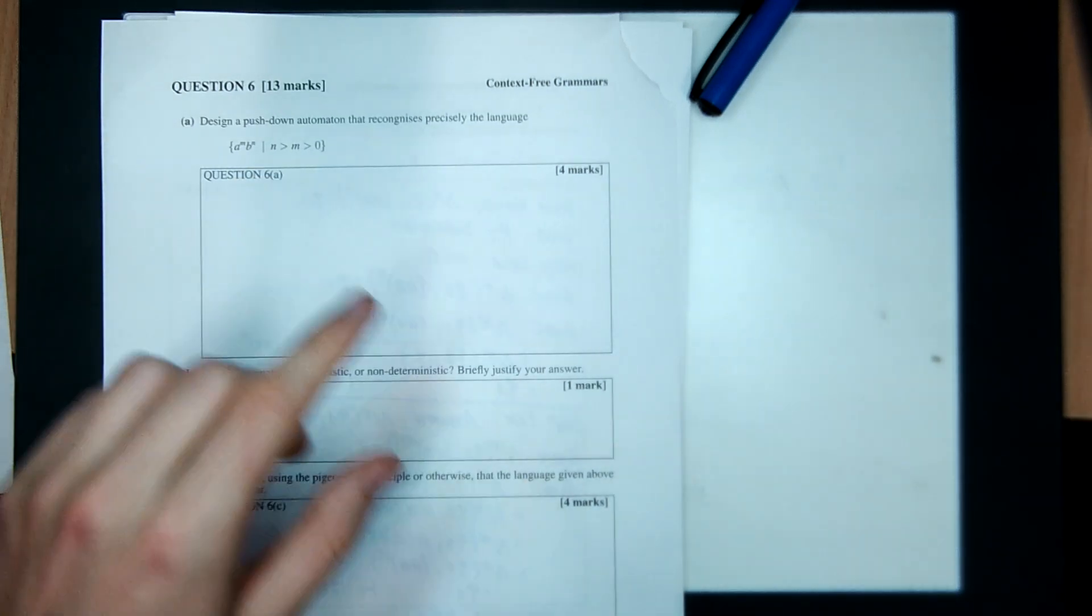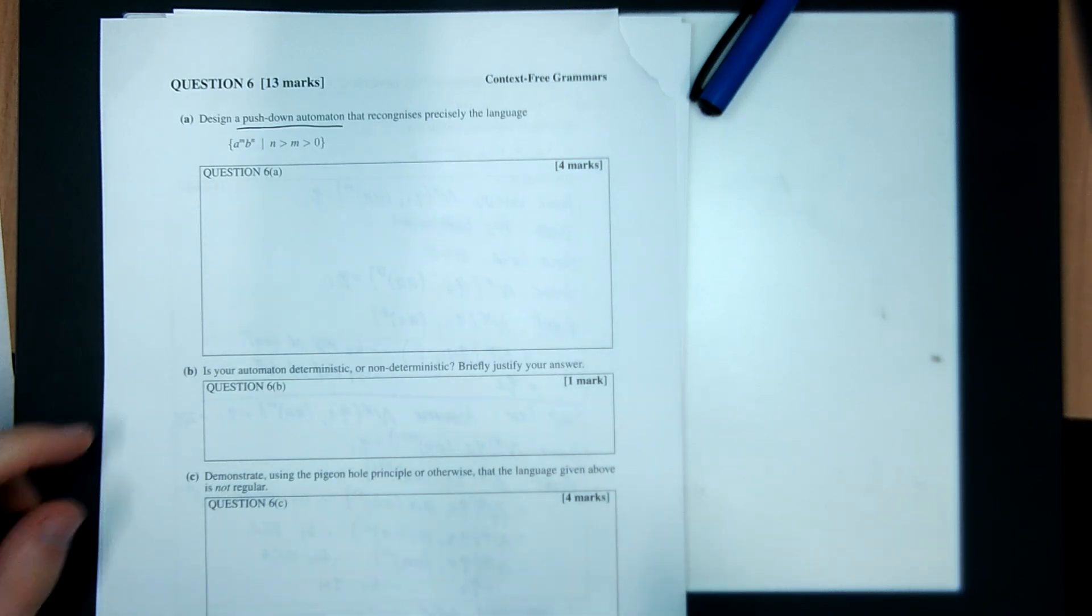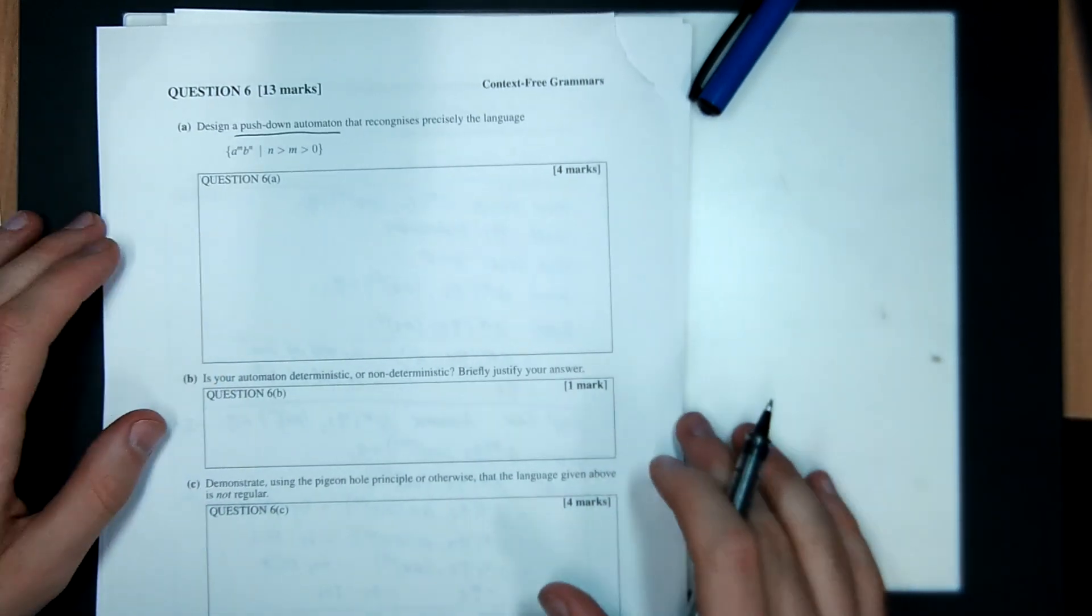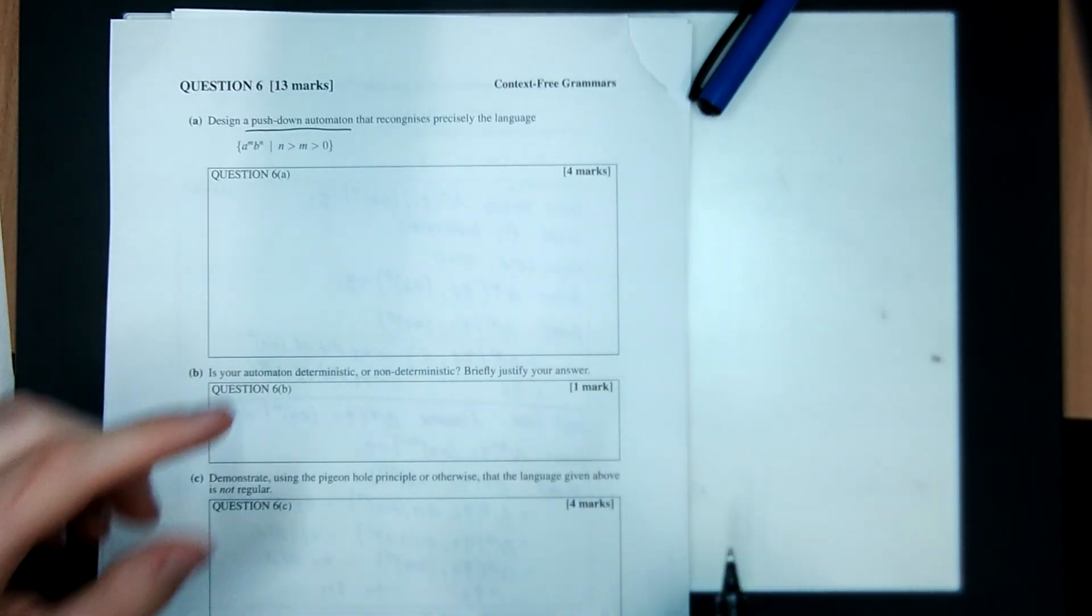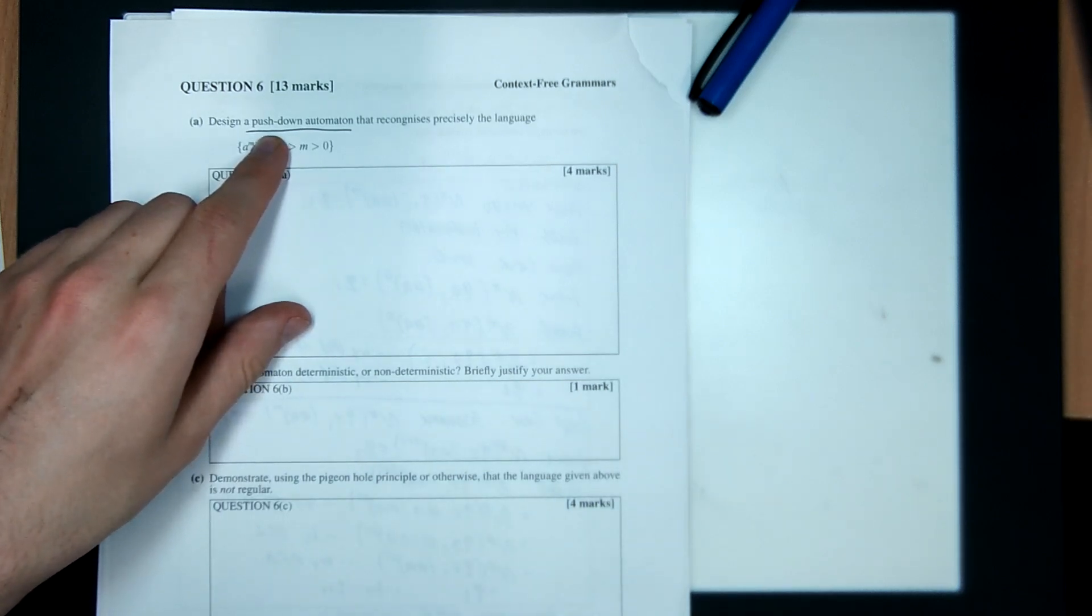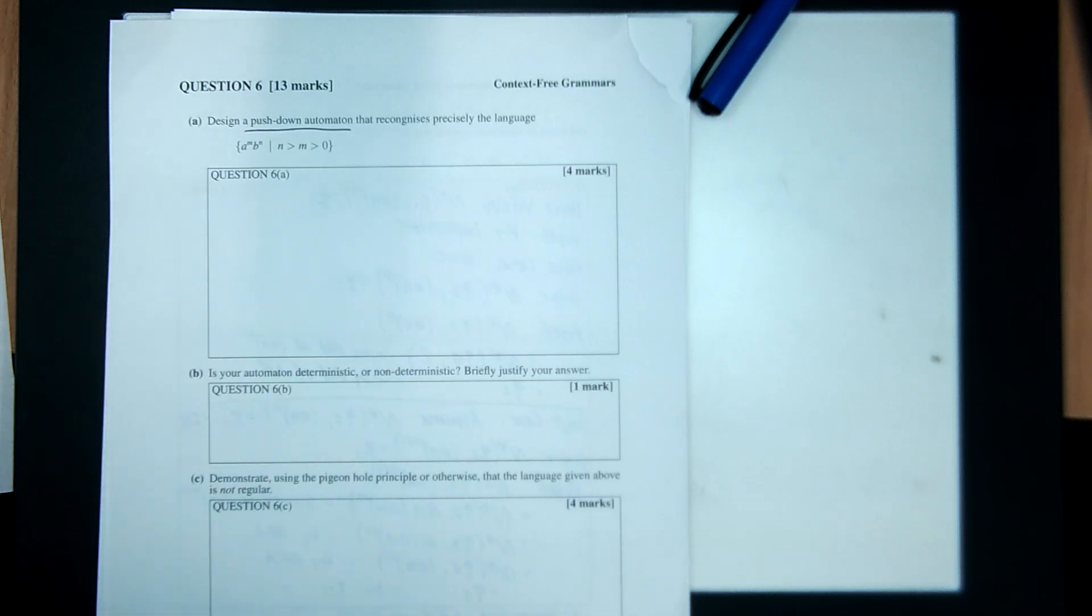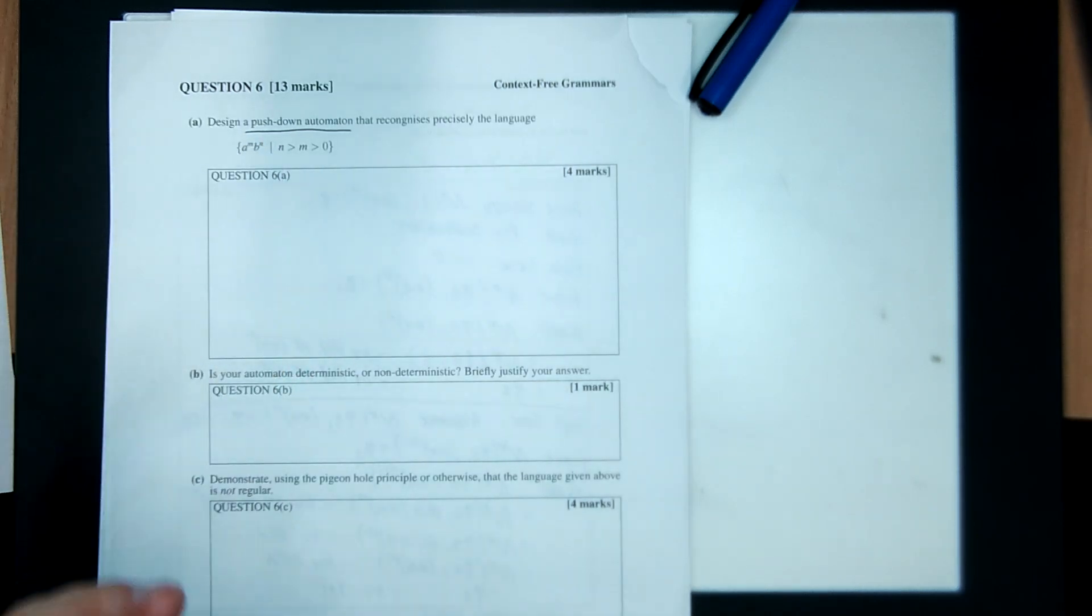Okay, it didn't specify that the pushdown automaton had to be deterministic, so we can totally cheat this problem. The cheating solution is you design a context-free grammar, and then you do the magic conversion algorithm from the lecture slides. So if I can build a grammar to do this, then I basically get the PDA for free. Now if the question said design a deterministic PDA, then you're screwed, then you actually do get to build it from scratch. But it doesn't, so I'm going to cheat.